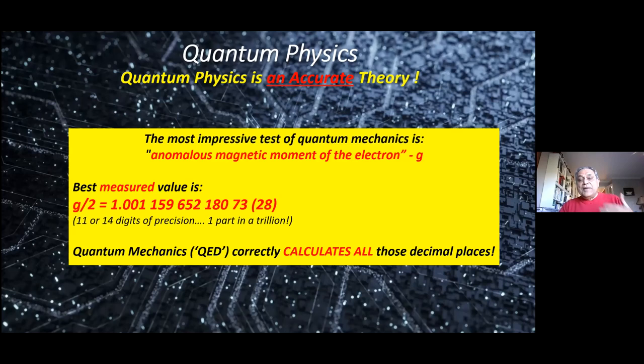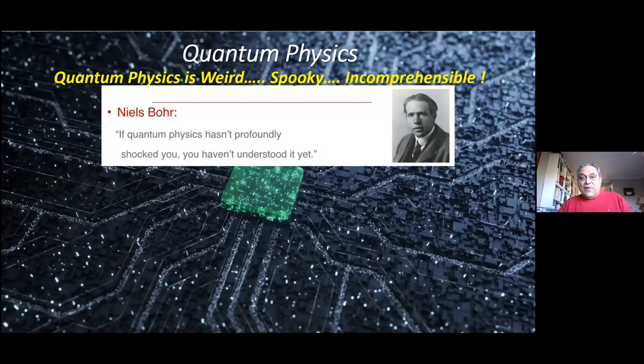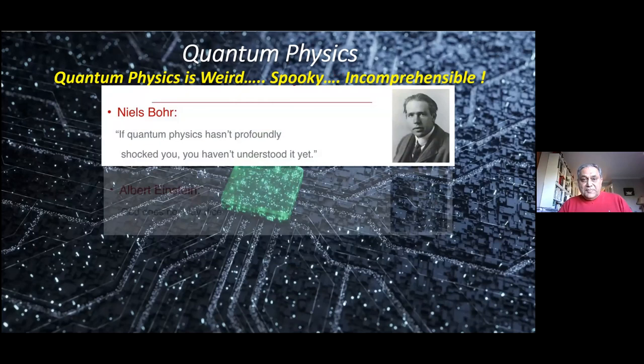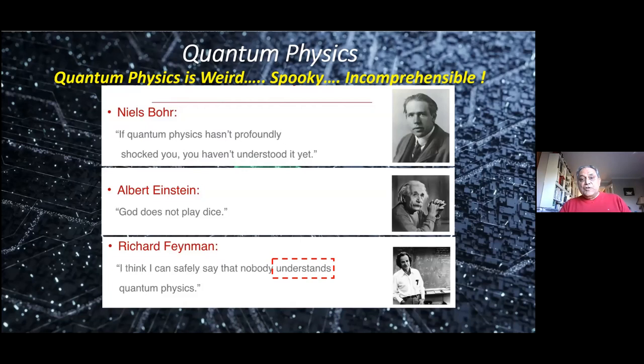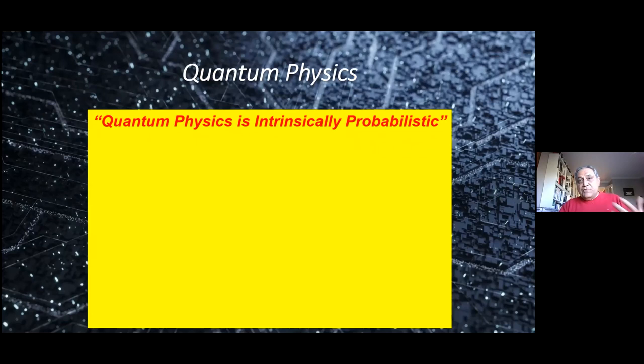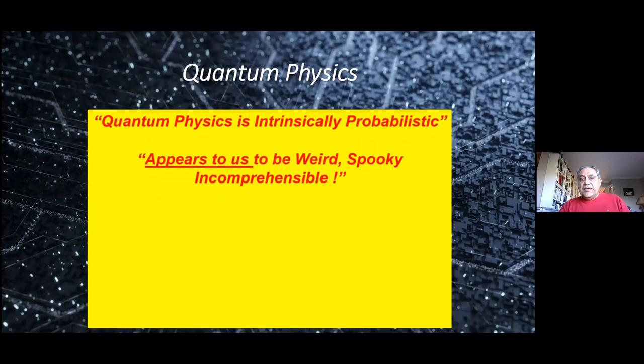Niels Bohr, one of the fathers of quantum physics, said that if quantum physics doesn't profoundly shock you, you haven't understood it. Einstein, of course, the ultimate intuitive genius and classicist, believe that God does not play dice. But unfortunately, rest in peace, Professor Einstein, indeed, God does seem to want to play dice. Richard Feynman says, I can safely say nobody understands quantum mechanics. And the understanding, I think, is in the human sense, the way we think of quantum mechanics. So I want to say that intrinsically probabilistic, and it appears to us as weird, spooky, and incomprehensible. And I'd like to have a brief stop for questions.